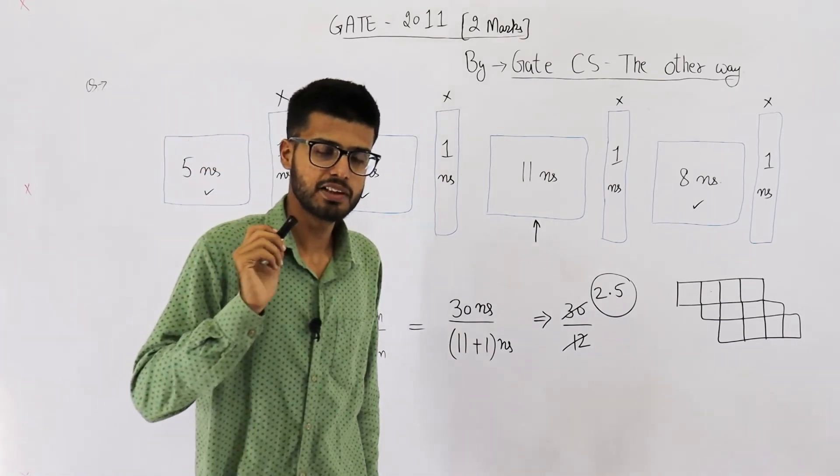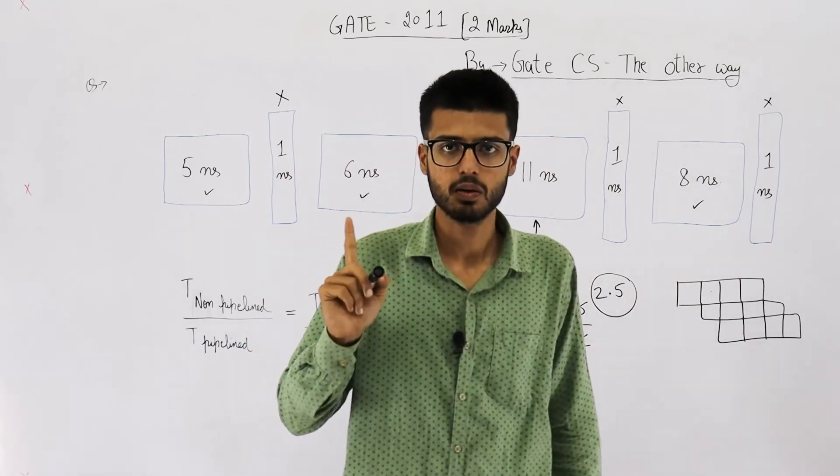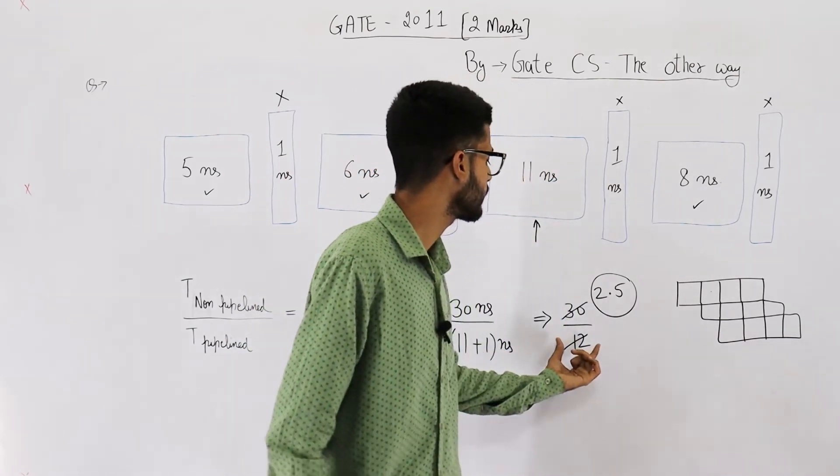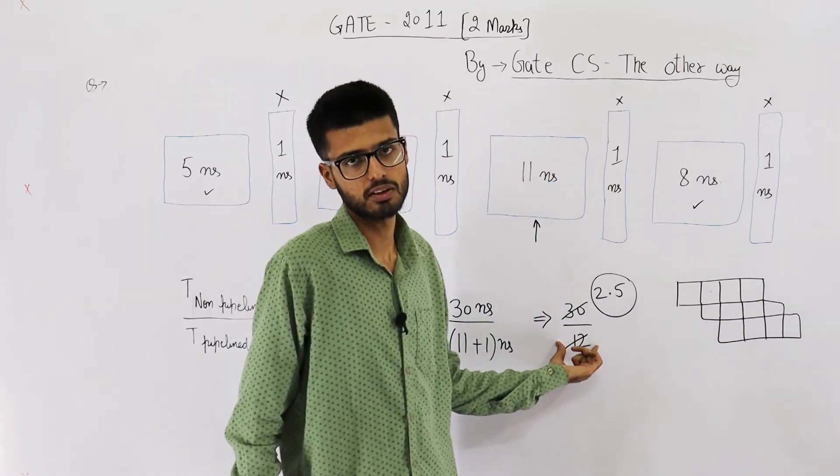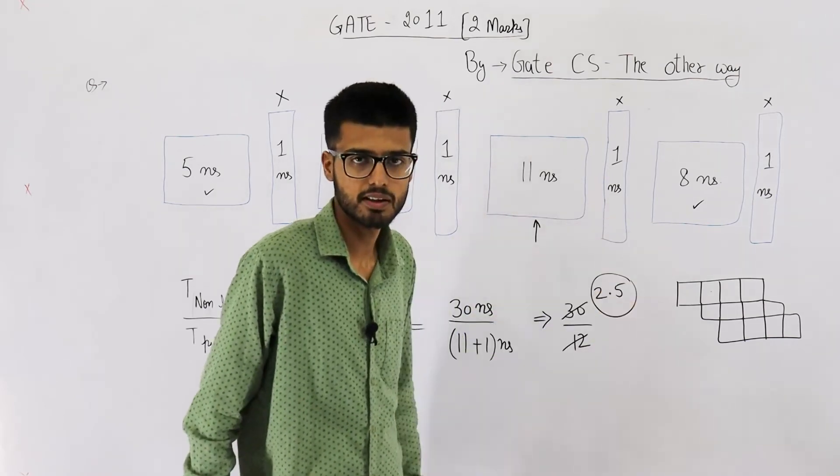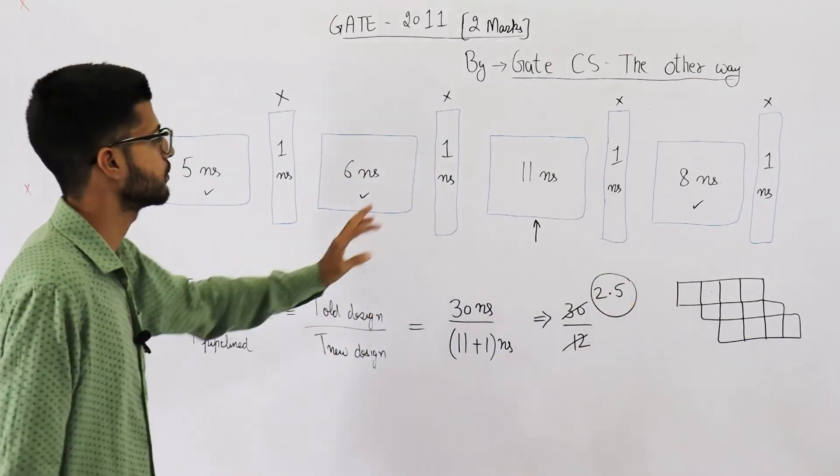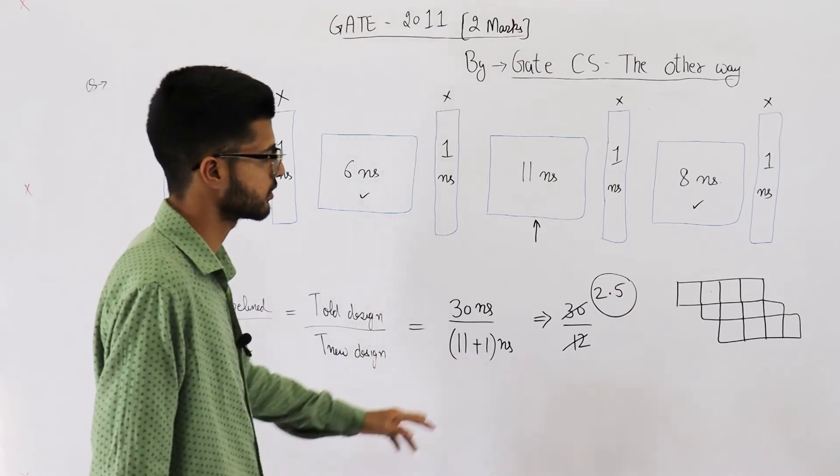Now because every instruction takes 1 clock, you can easily say that 1 instruction takes 12 nanosecond. Because time period of clock, we have already calculated 12, 11 plus 1. So your answer here is 2.5.